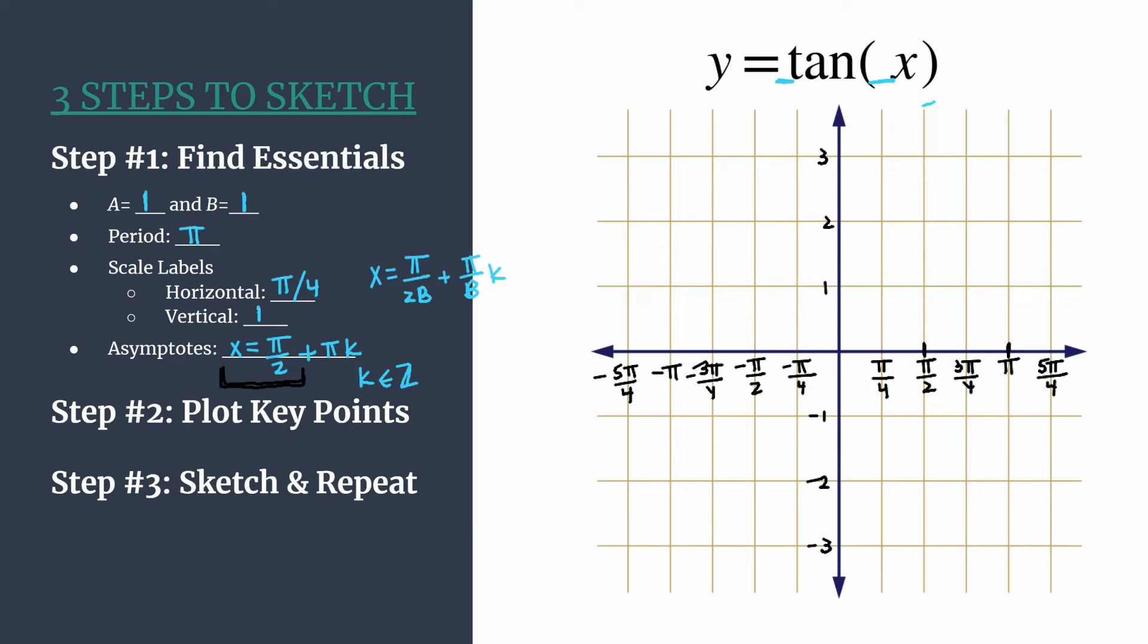So step two is to plot our key points. And remember this falls in the pattern point, point, asymptote, point. So our first point for basic tangent graphs always gets to start on the origin. Our second point will have an x coordinate that's our first horizontal tick mark label and a y coordinate of a. So in this case, the point falls at π over four comma one.